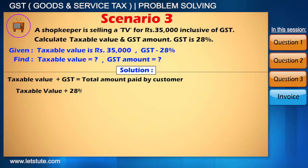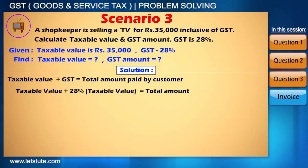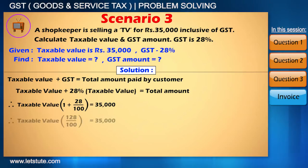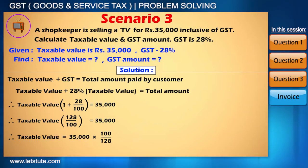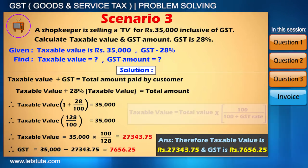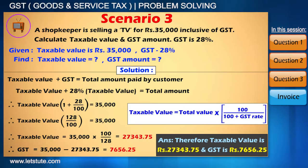Taxable value plus 28% of taxable value, which is GST, equals the total amount paid by the customer. So we can write: taxable value × (1 + 28/100) = 35,000. And finally, we get taxable value = 35,000 × 100 / 128. When we calculate this, we get the taxable value of Rs 27,343.75, which is the selling price of the product. You can use this formula to calculate the taxable value of any product.